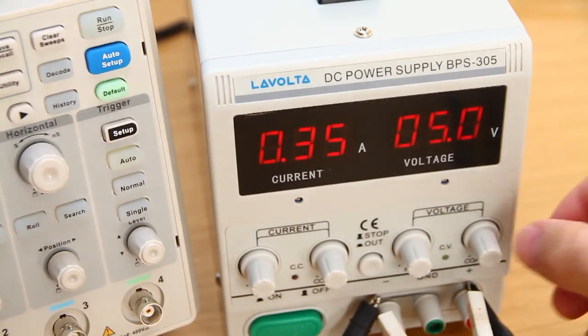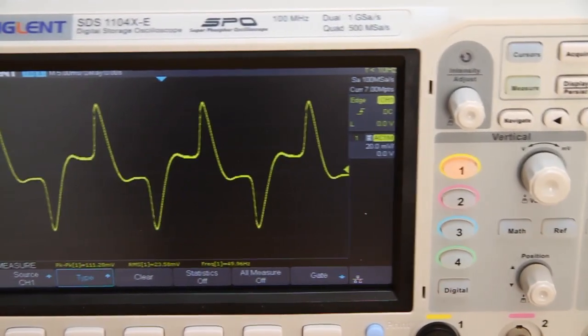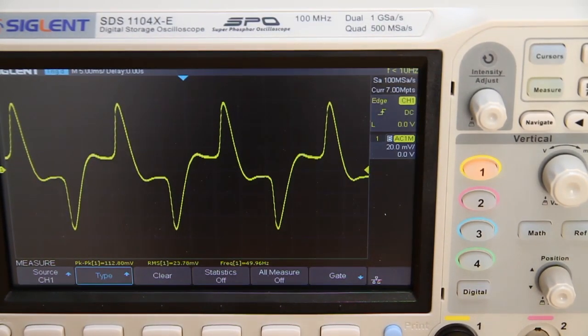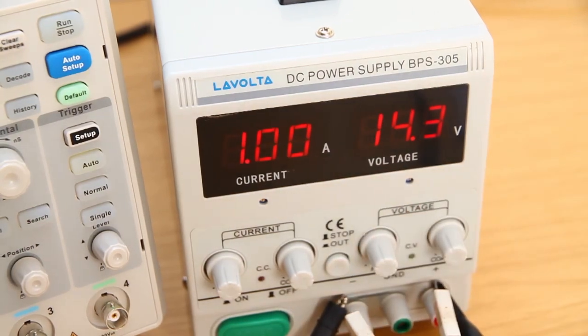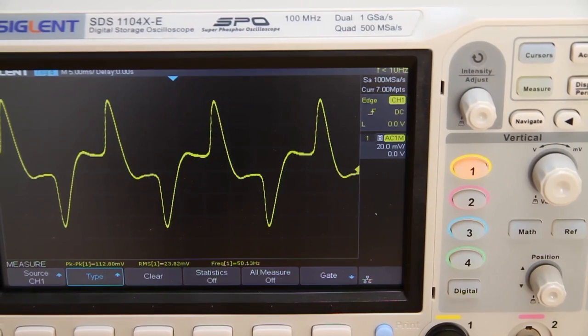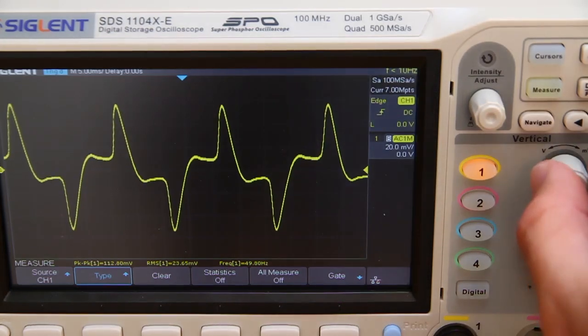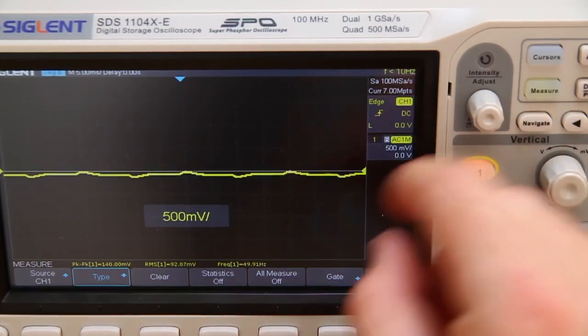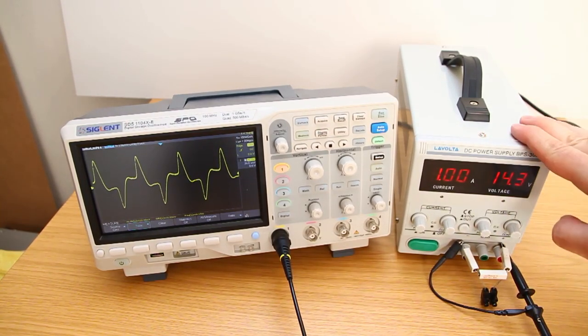Let's try 12 volts. We are at 12 volts and 840 milliamps. And what do we have on the display? Still about 24 millivolts RMS and 113 peak to peak. That's not that great, that's actually quite bad. I mean, I'm in the volt division and you can still see it.